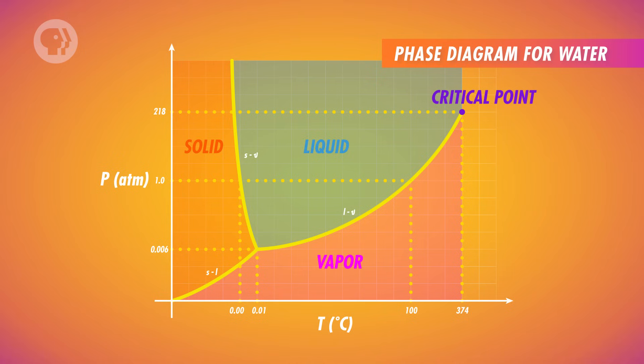For a gas to become a liquid, it has to be below a certain temperature known as the critical temperature. For water, the critical temperature is about 647 Kelvin. Above the critical temperature, you can increase the pressure as much as you want, but the gas will never condense into a liquid. There's a critical pressure too, which for water is about 22 megapascals. If the pressure is above the critical pressure, you can raise the temperature as much as you want, but the liquid will never boil.